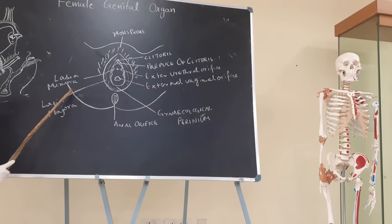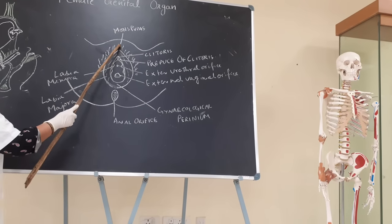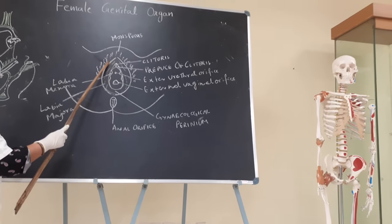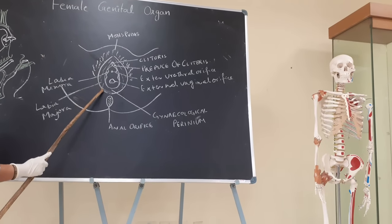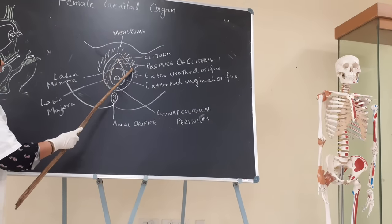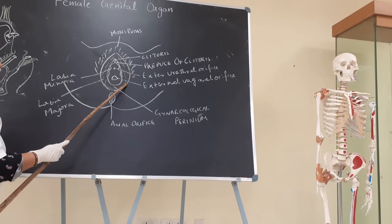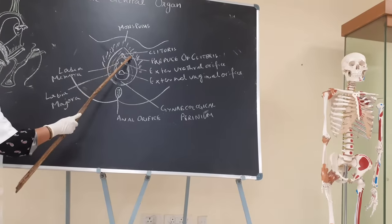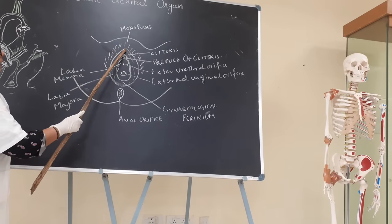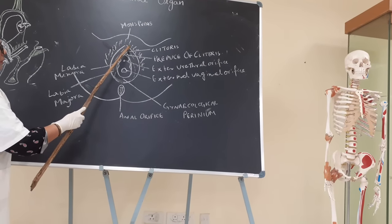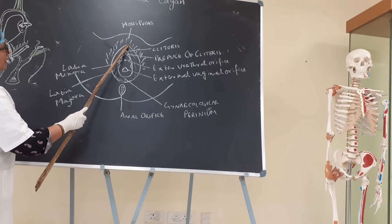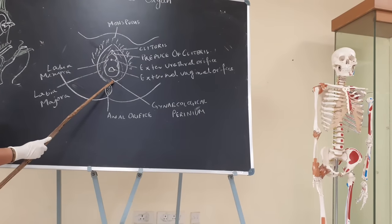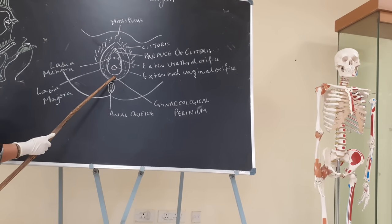Coming to the next part, that is the labia majora. The mons pubis is inferiorly discontinuous with two cutaneous folds called the labia majora. Anteriorly, they are connected by the anterior commissure. Posteriorly, they are connected by the posterior commissure.